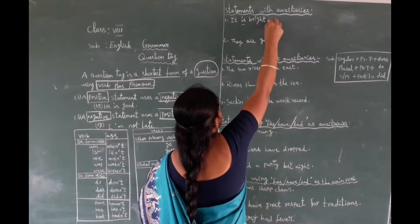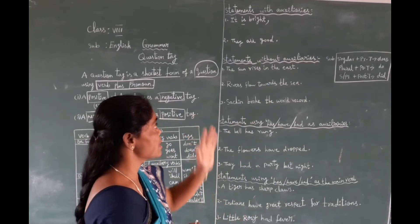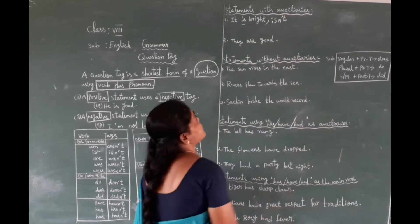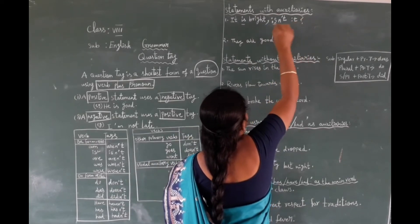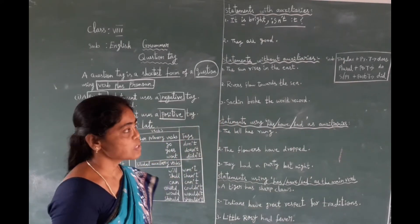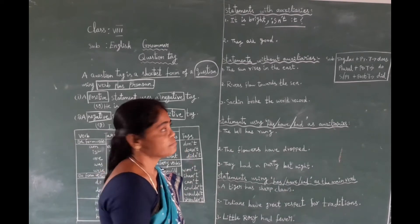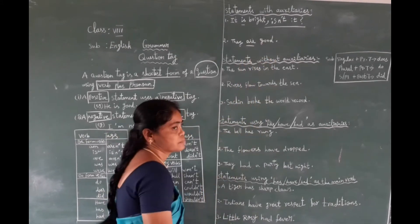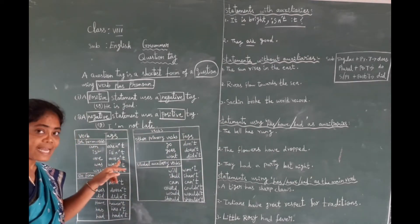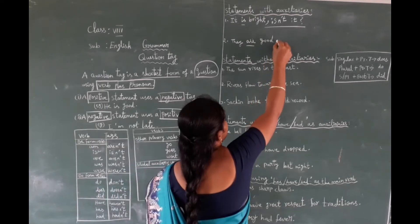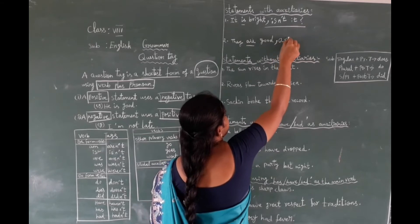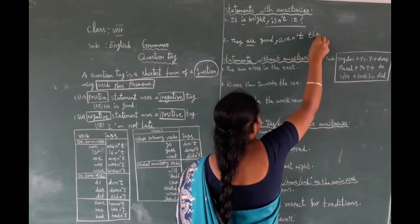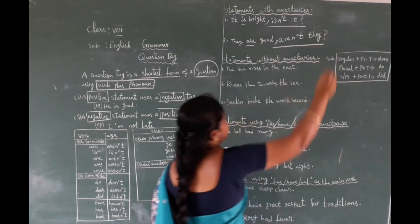Next example: 'They are good.' The auxiliary is 'are', which is positive. So the tag we want to use is 'aren't'. The subject is 'they', so the tag is: 'aren't they?' This is how we form the question tag with auxiliaries. Now we come to statements without auxiliaries.